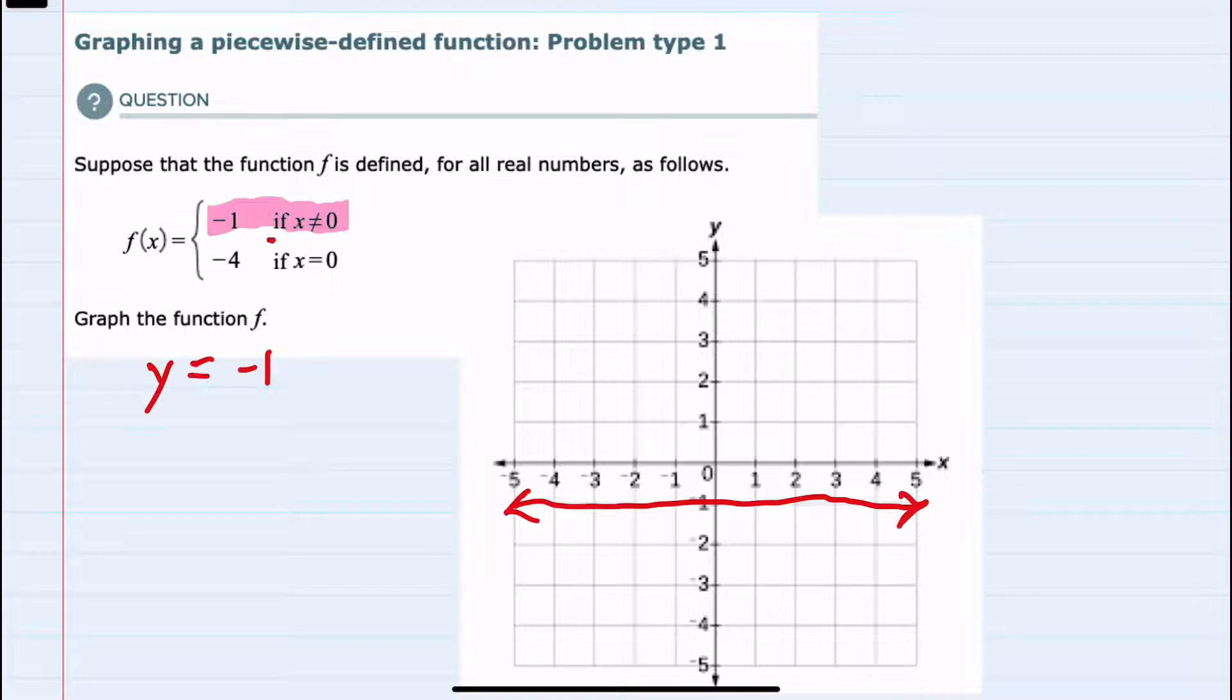However, this will only be the case where x is not equal to 0. So this would be everywhere except where x equals 0, so I'll need to put a hole in this graph where x equals 0. And then for the second piece,